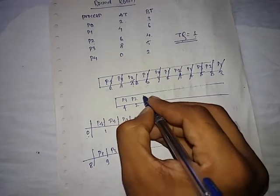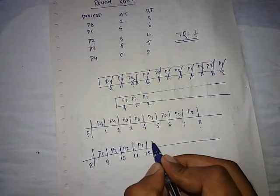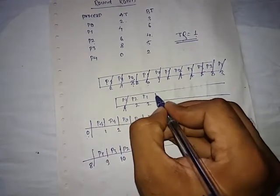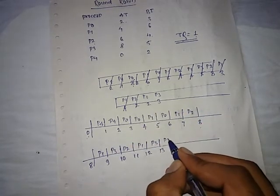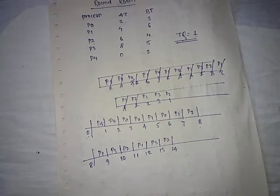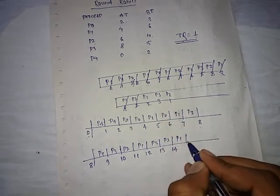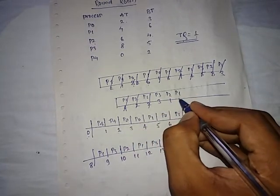Next one is P1, so P1 for twelve. The time quantum is one, that's why it's twelve, and three minus one is two. It goes here for two. Next one is P3 again for one, that means thirteen, and it goes here, P3 for three. Next one is P2. P2 for fourteen, and here P2 for one.